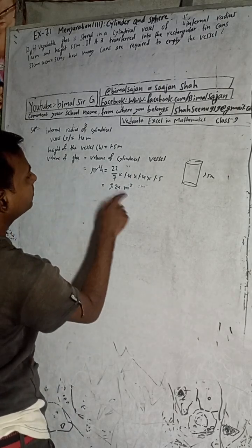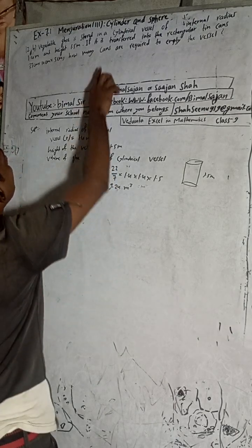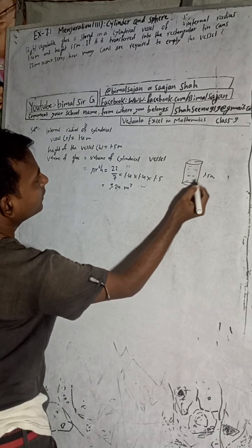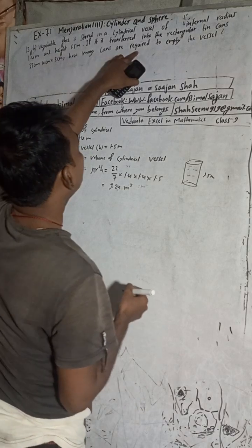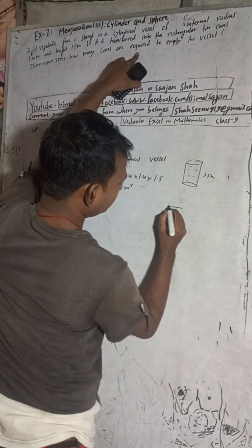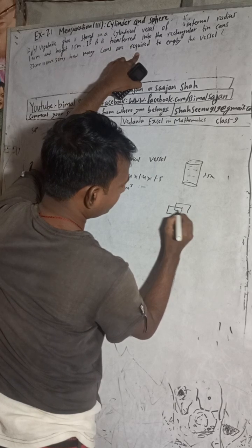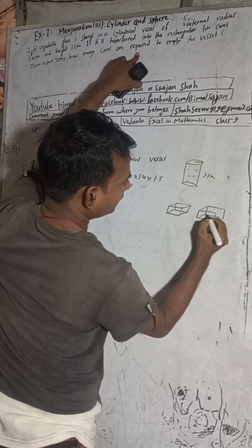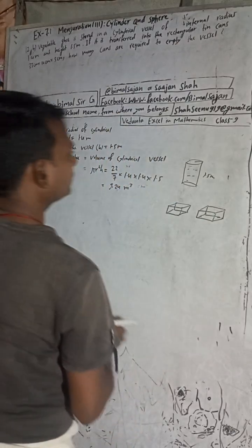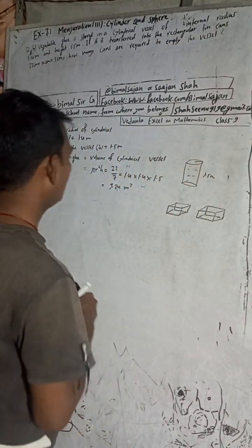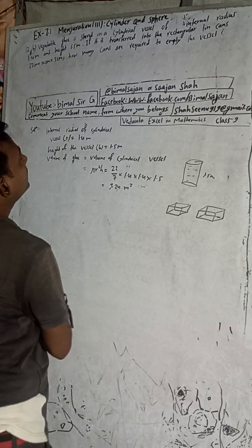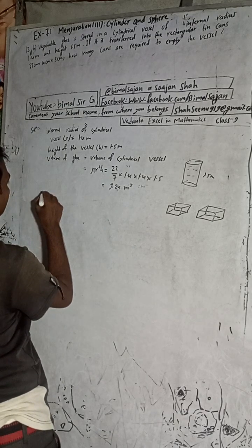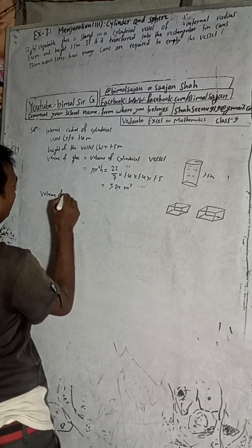We got the volume as 9.24 meter cube. Now if it is transferred into a rectangular tin — this type of rectangular tin — how many tins are required? So now we need the volume of each rectangular tin.